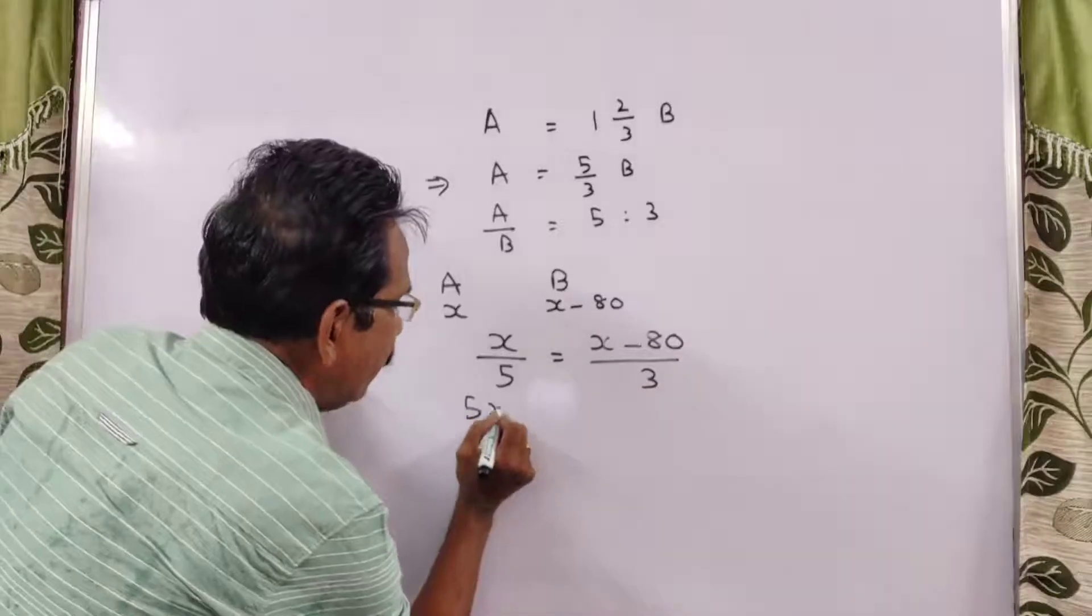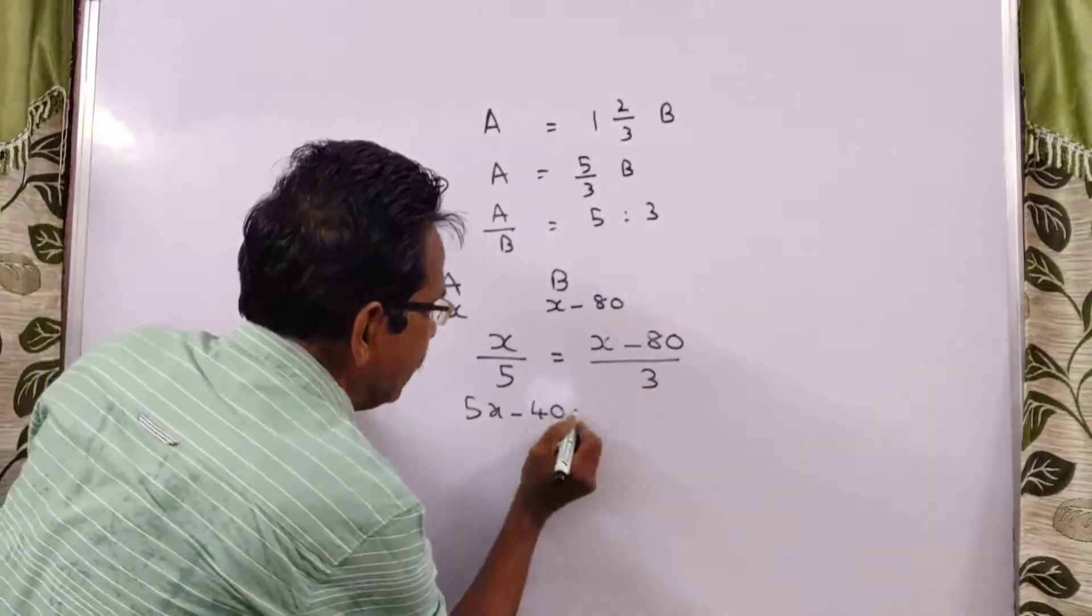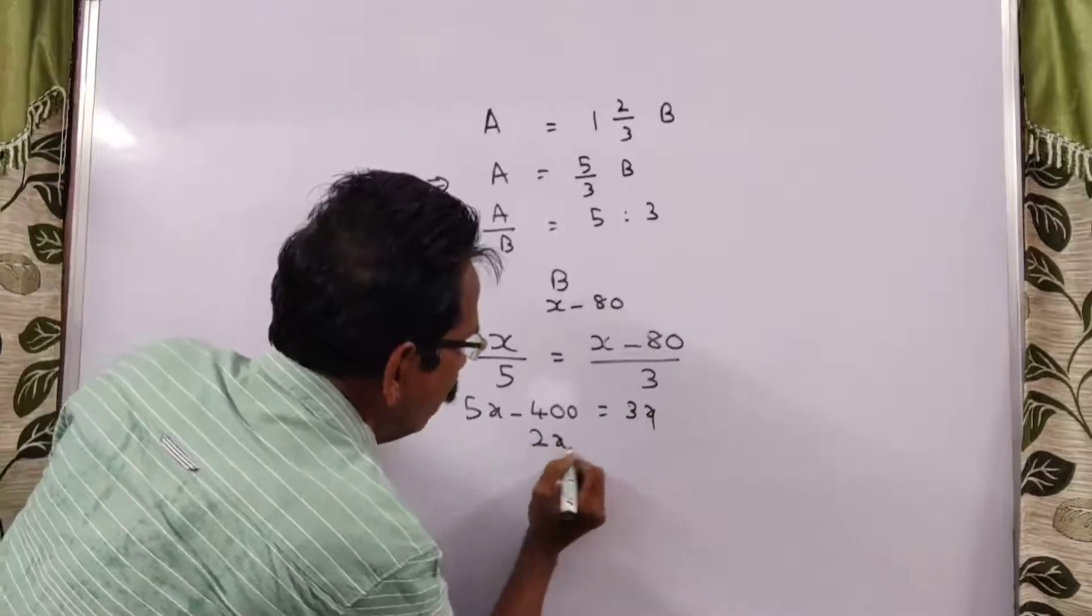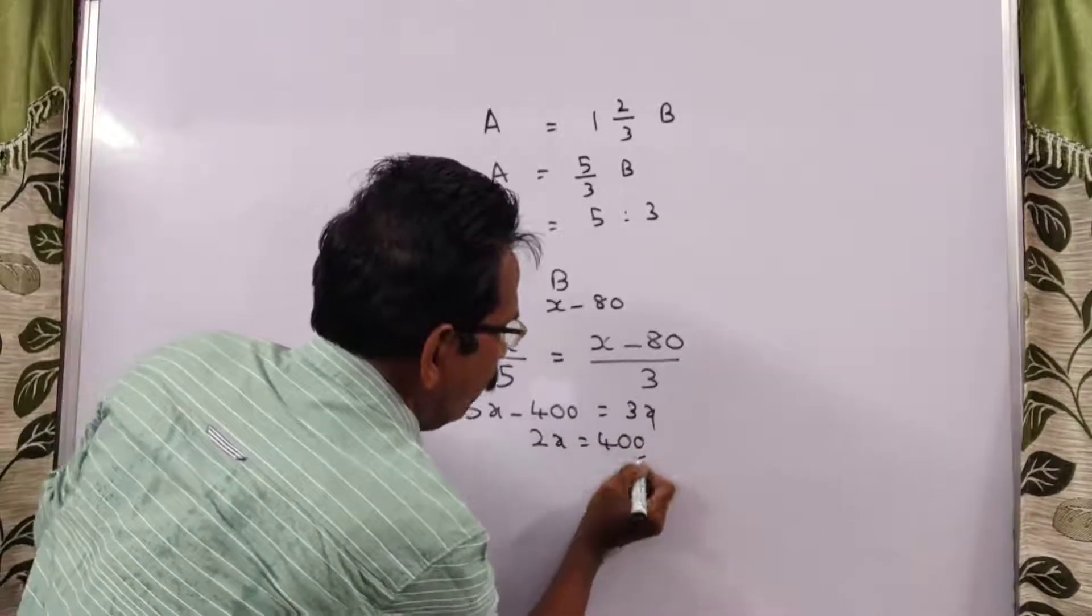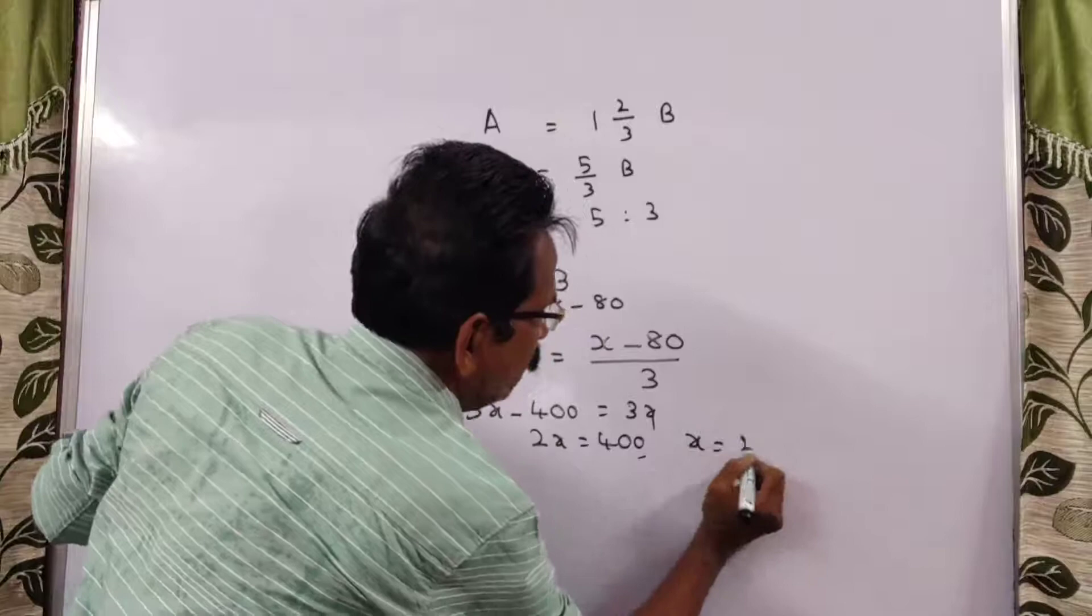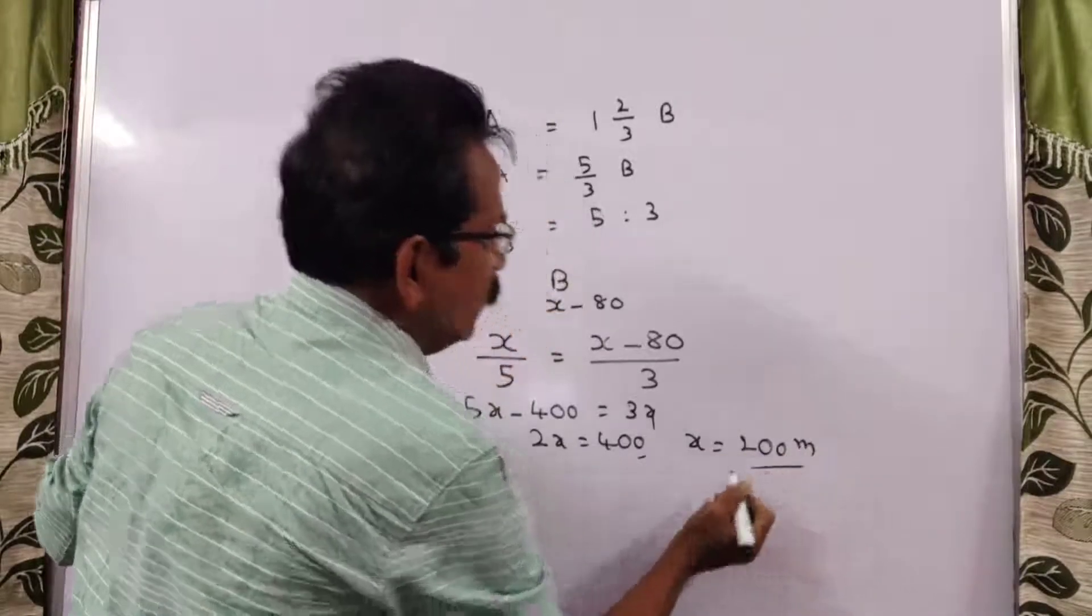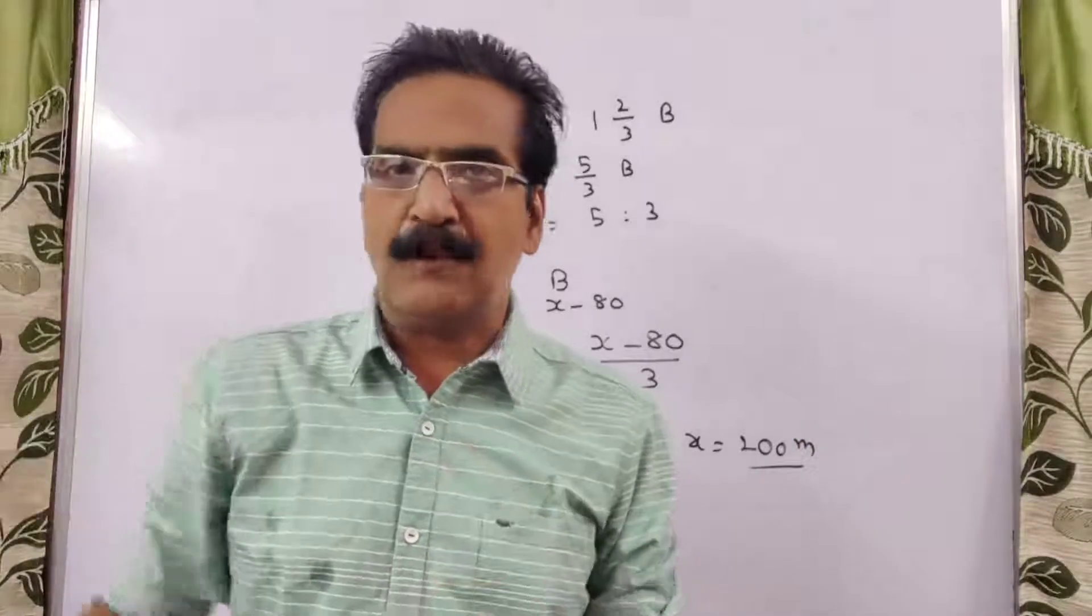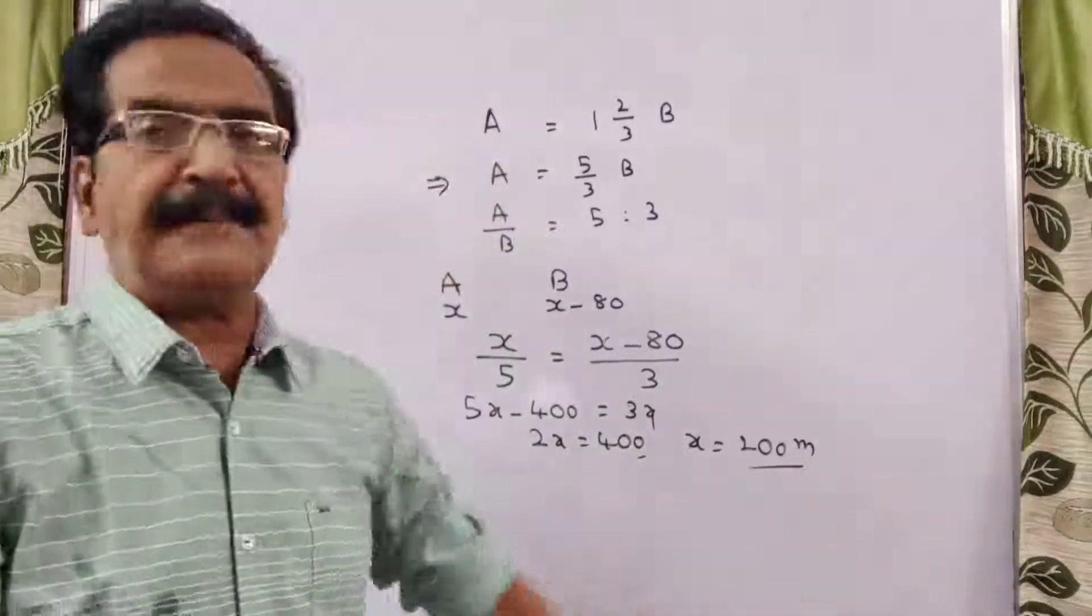So, x over 5 equals x minus 80 over 3. 5x minus 400 equals 3x. 2x equals 400, so x equals 200 meters.